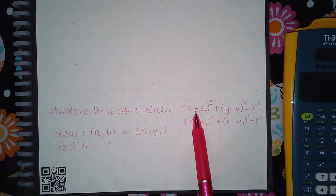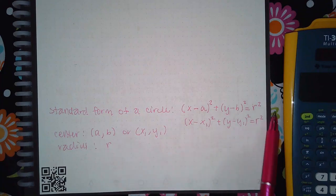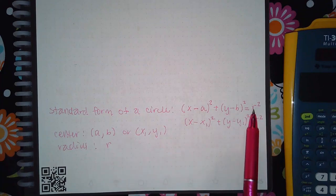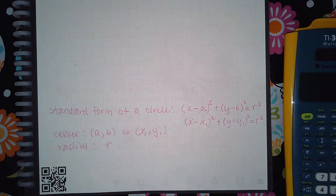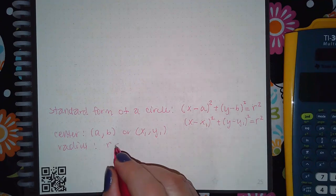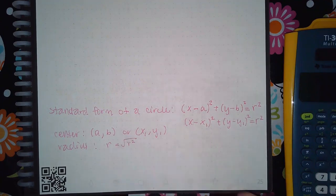For the radius, notice that this is radius squared, so in order to figure out the radius you're going to have to take the square root of that radius squared.